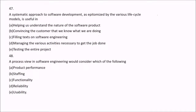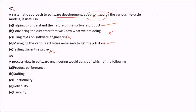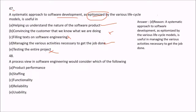Question 47: A systematic approach to software development, as epitomized by the various lifecycle models, is useful for what? Options include: helping us understand the nature of the software product; convincing the customer that we know what we are doing; managing the various activities necessary to get the job done; and testing the entire project. Testing the entire project is not correct — there should be unit testing, integration testing, and system testing separately. The answer is C — managing the various activities necessary to get the job done.